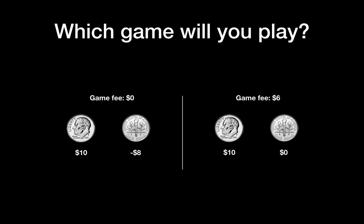There are two types of games. In the first game, there is no game fee — you take 10 dollars for the front side and pay 8 dollars for the back side. In the second game, there is a game fee: every time you play you pay 6 dollars, you take 10 dollars for the front side, but you never lose for the back side.